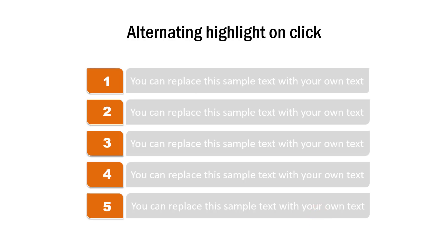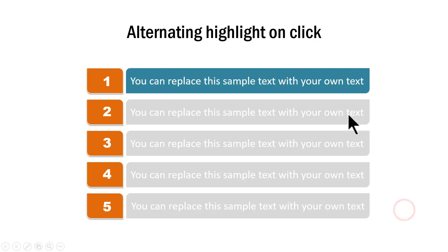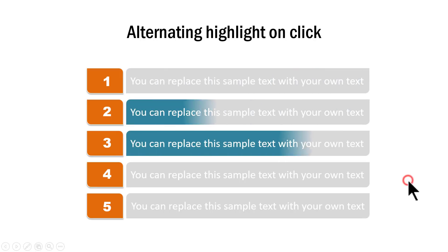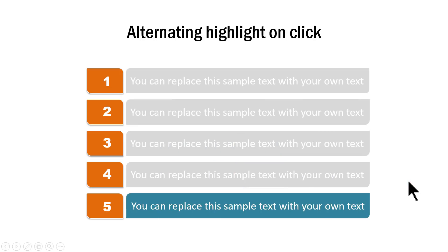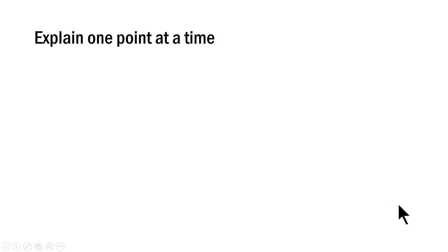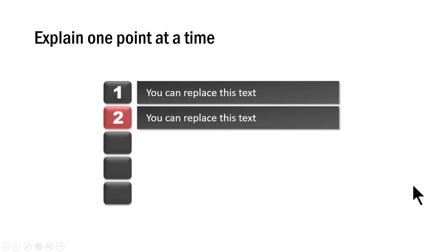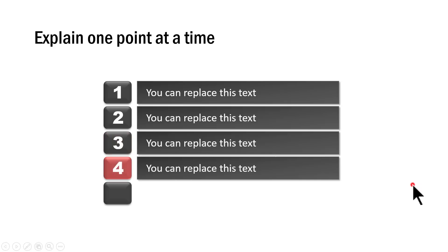Another example is where we talk about five different points. The text elements are not clearly visible at first. On a click you make it easy for the audience to read the first point, finish your explanation, and then bring attention to the next point, and the next, and so on. In line with the same idea, another alternative shows explanation one point at a time — there are five points in total and they are revealed one by one.